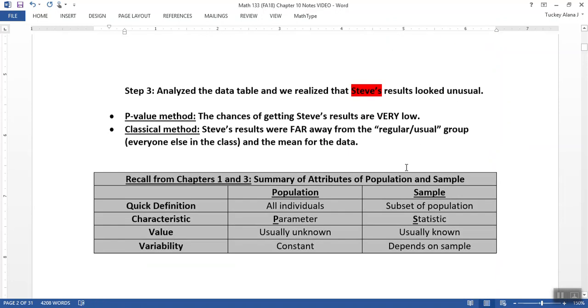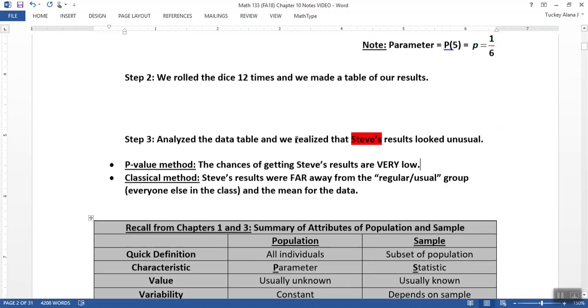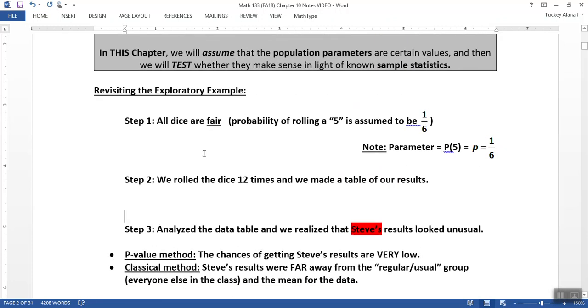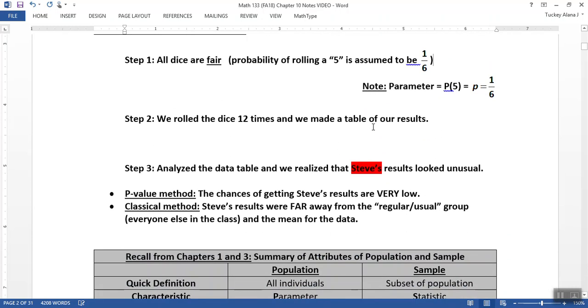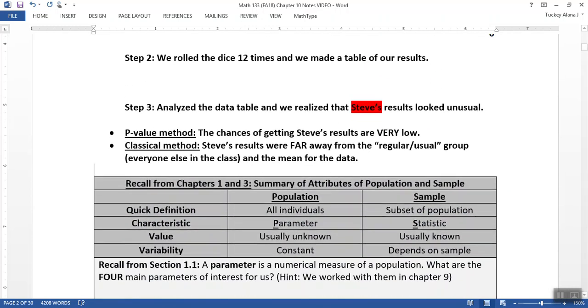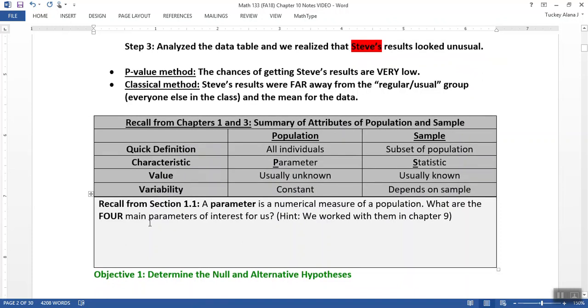Now we tested this with a population parameter. You might not have realized it, but the parameter we were working with was the p equals 1/6, the population proportion. So we assume when you pick up the dice out of the box that it's 1/6. That's one of the parameters that we can test.